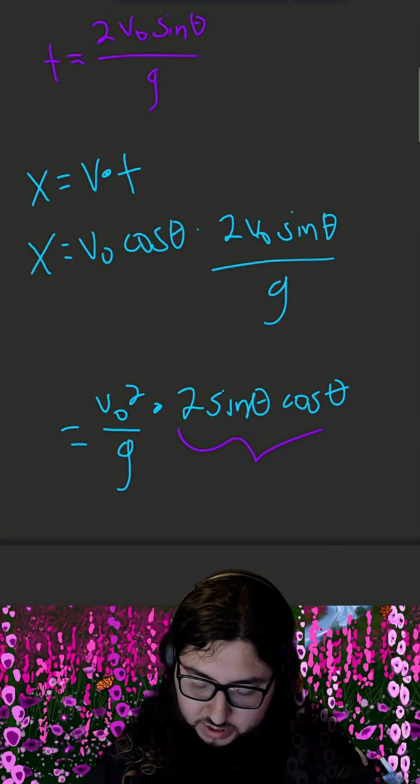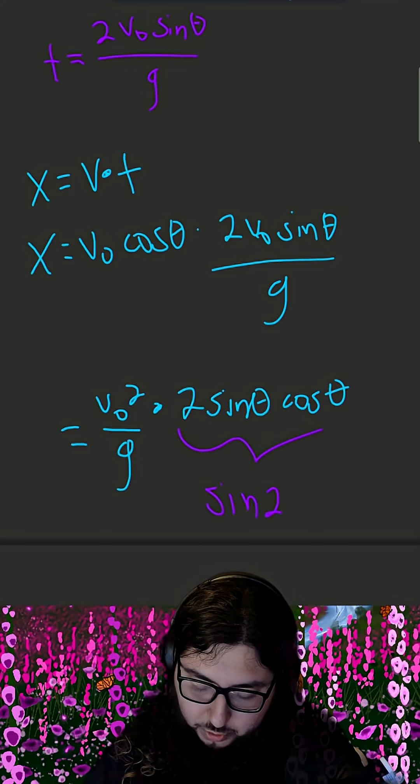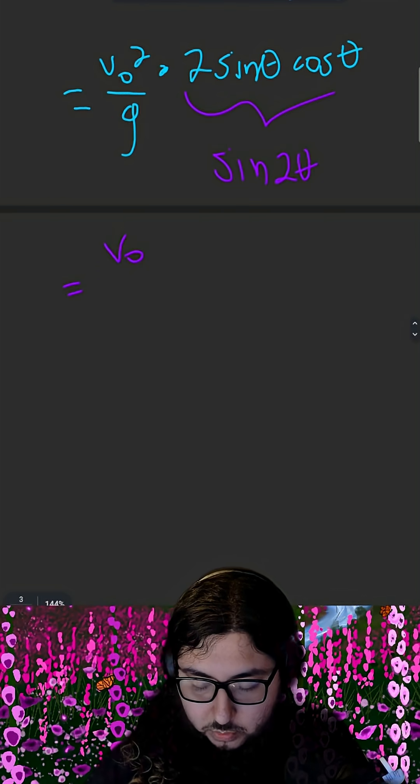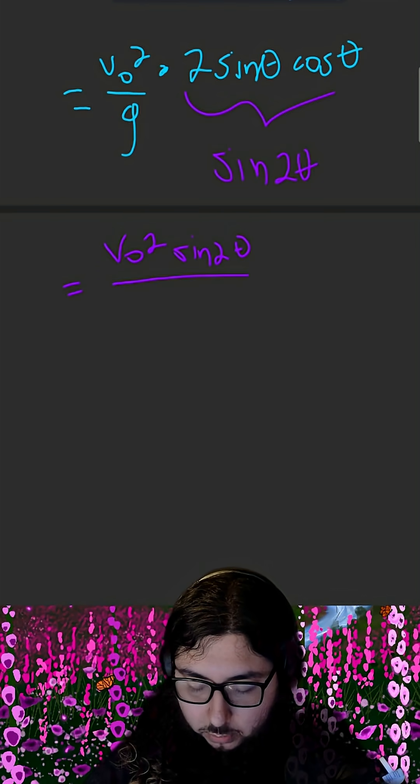And you may recognize this expression as a trig identity for sine of 2 theta. So we can simplify this expression as v naught squared sine of 2 theta all over g.